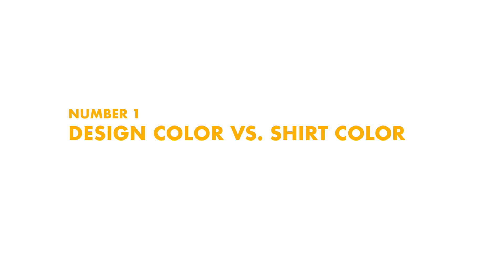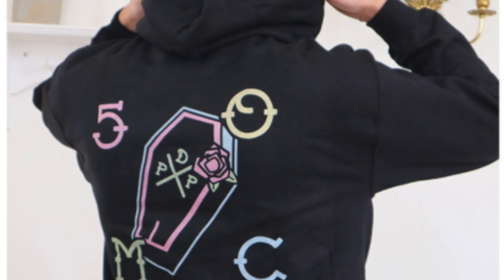Number one — this is a big one because it messes up everything. If you're not designing for the overall shirt, you're messing up. The shirt has its own color, so you need to design with the color of the actual shirt in mind. You have to know the color code for the shirt you're designing for, because if you mess that up, you're messing up the entire plan. Make sure you know the color of the actual shirt.